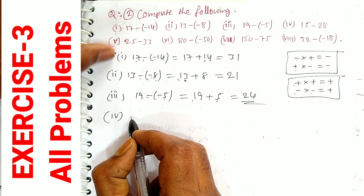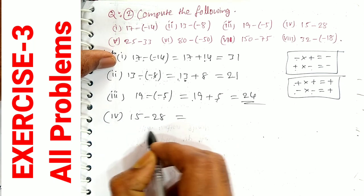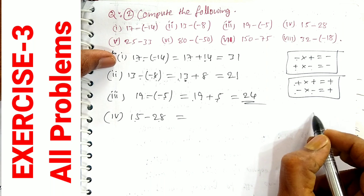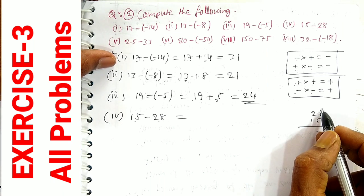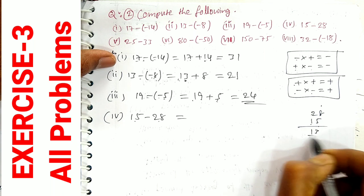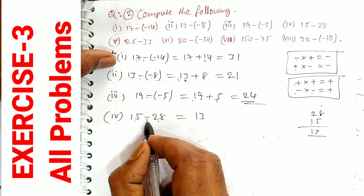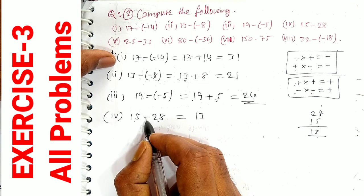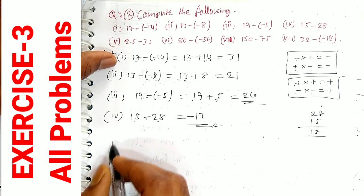Fourth part: 15 minus 28. Since 28 is bigger, we compute 28 minus 15. 8 minus 5 is 3, 2 minus 1 is 1 — giving 13. Since the bigger number has a minus sign, the answer is minus 13.